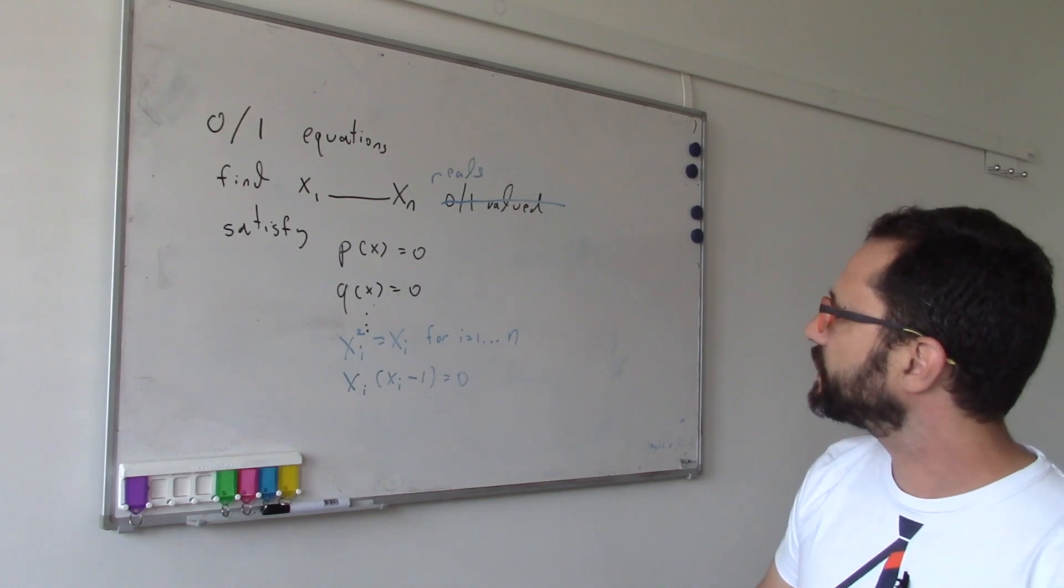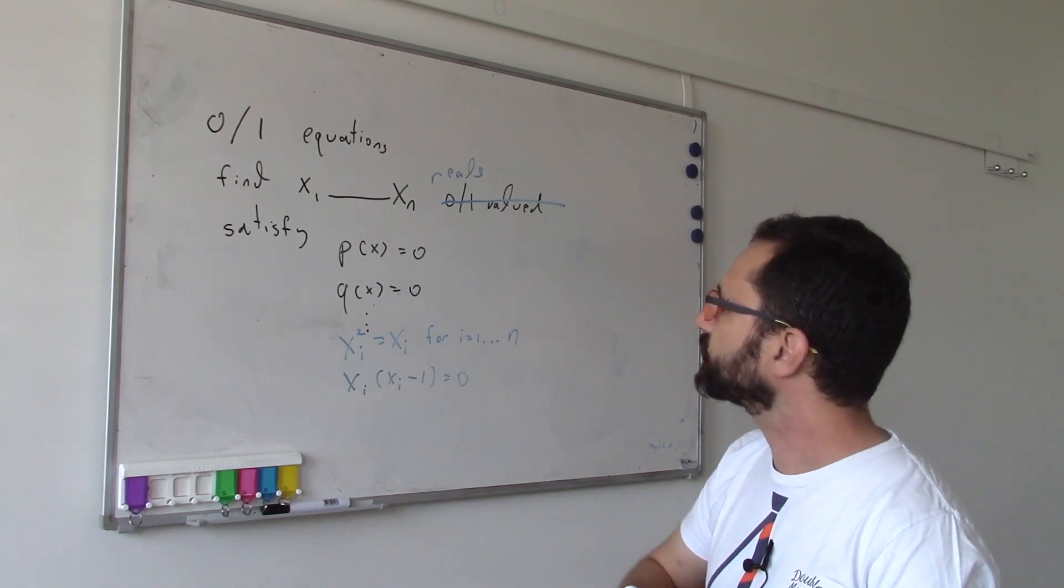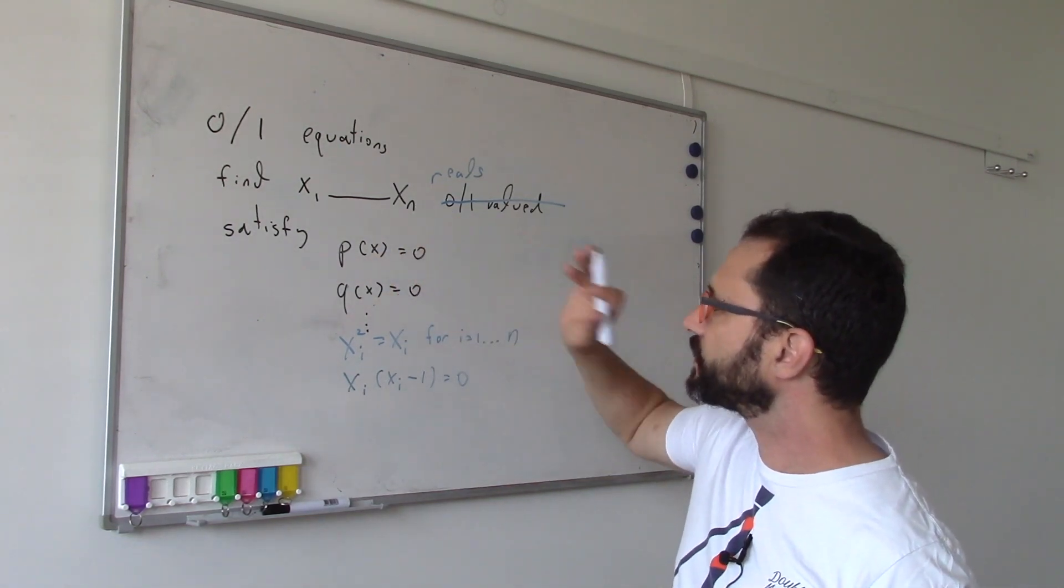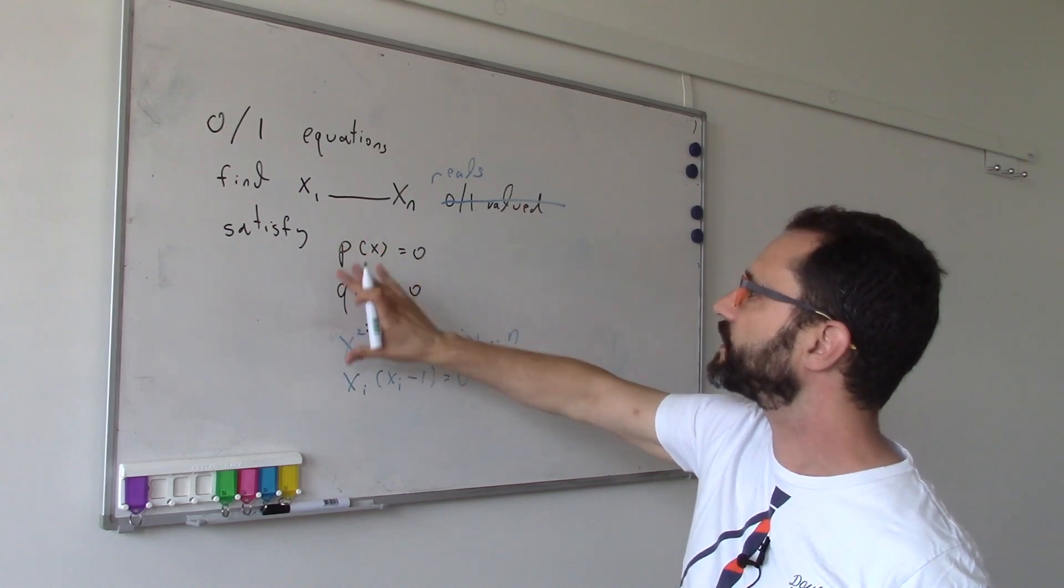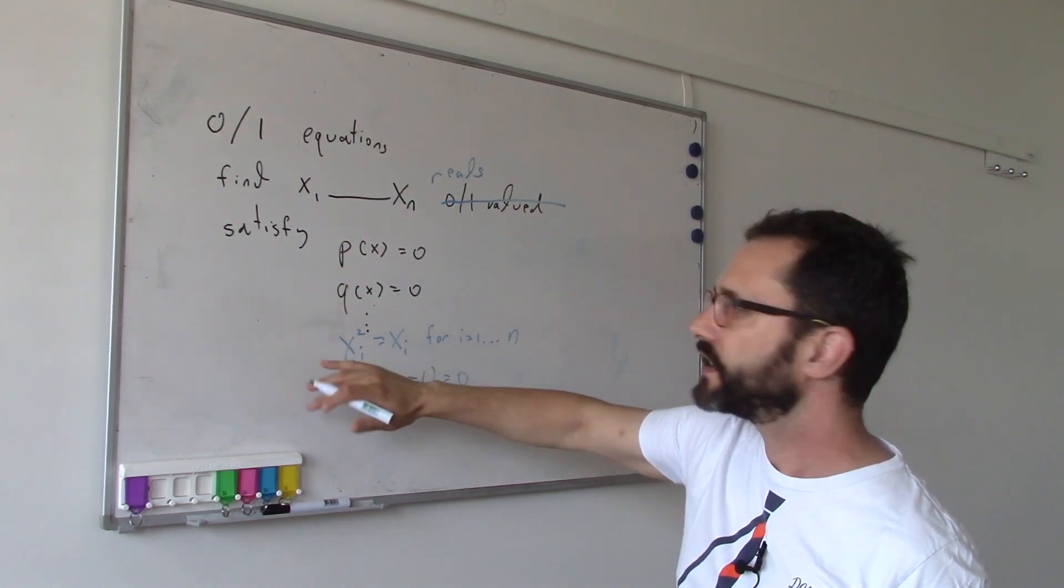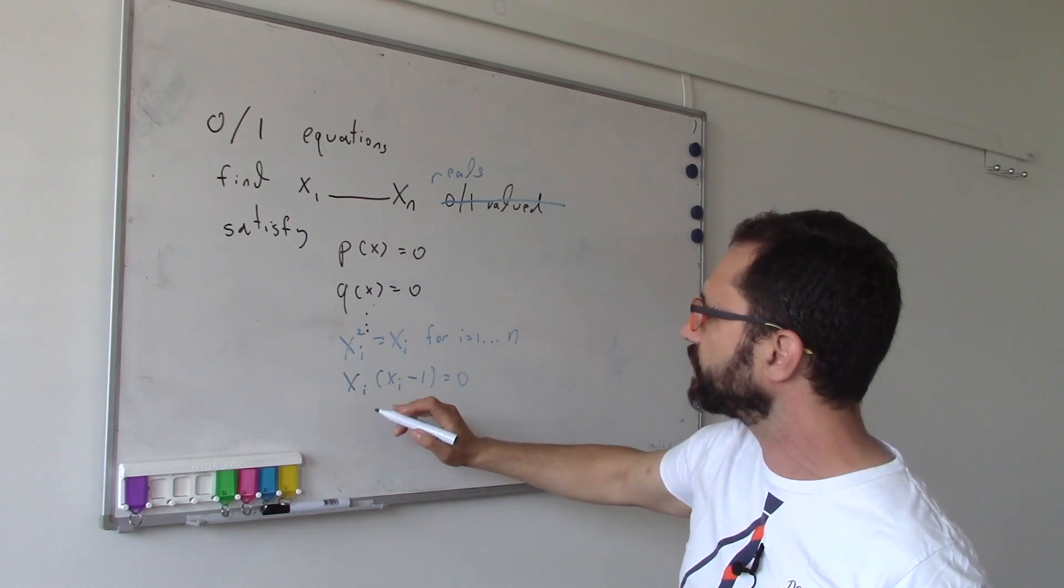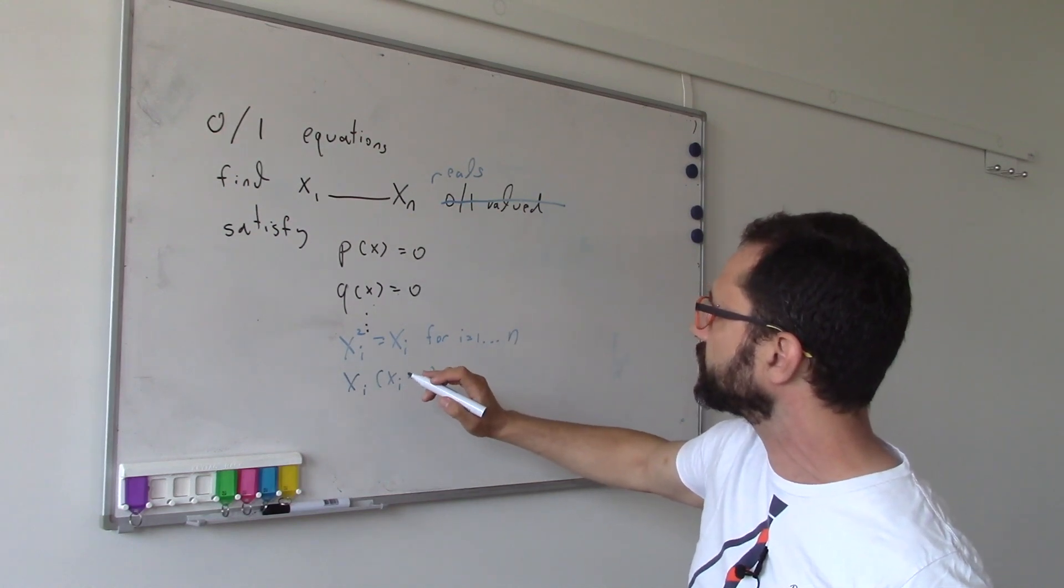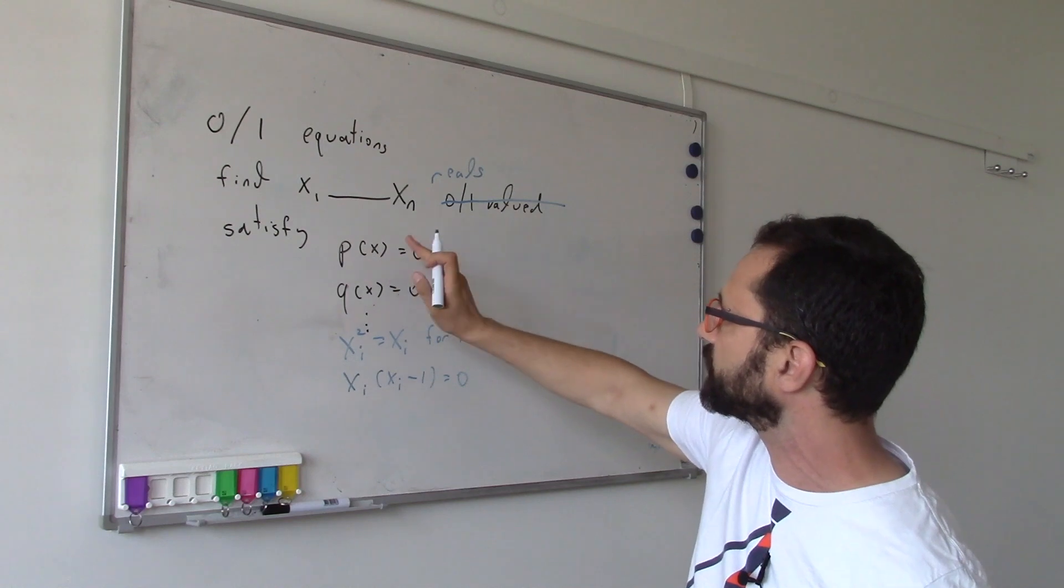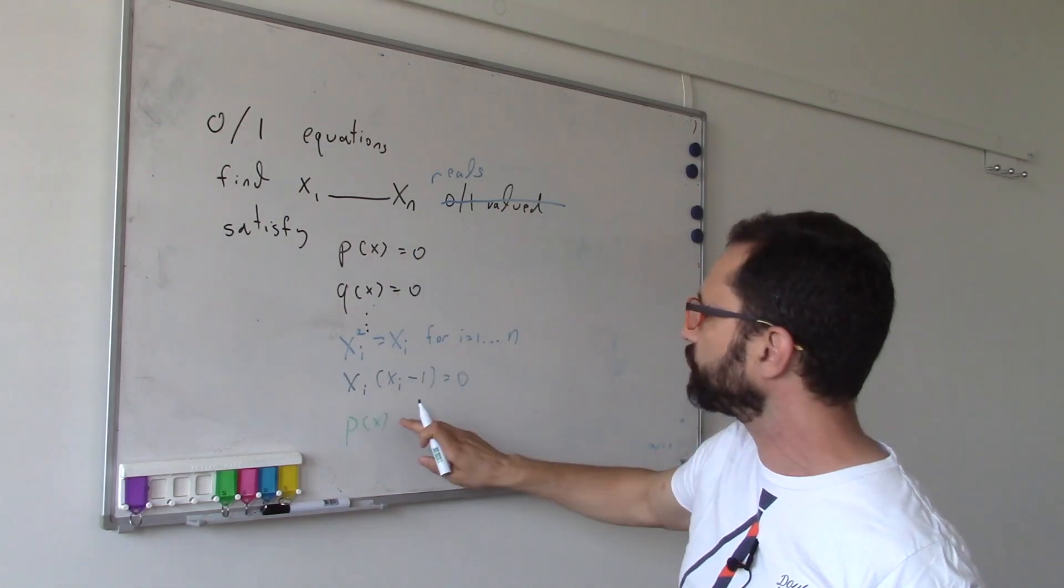Wait, what? How does one get from a system of equations to the problem of writing a polynomial as a sum of squares? For example, you could say: suppose you want to certify that this doesn't have a solution. You say, if it had a solution, then in particular, for x's that satisfy this, p(x) is zero, right?